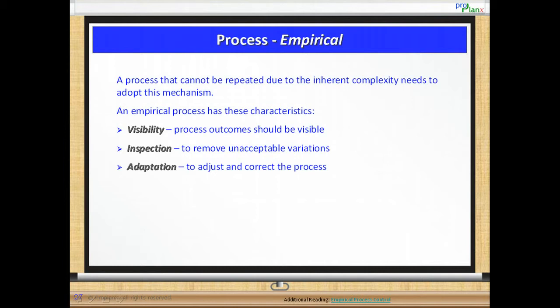How does agile support visibility? The outcome of an iteration which is the increment of product is the visible part.